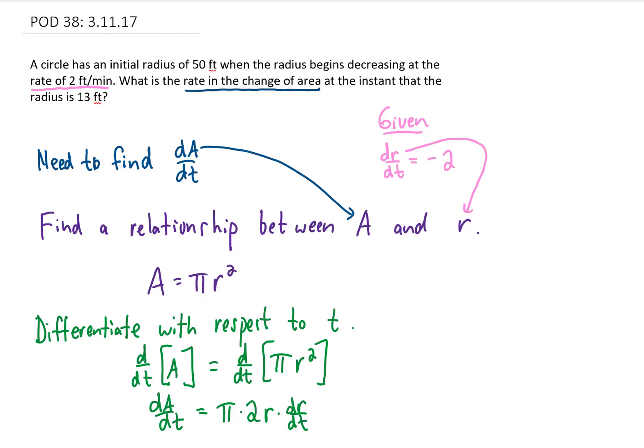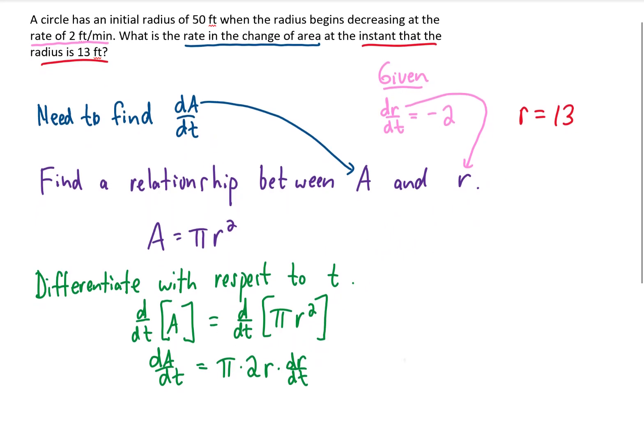So let's reevaluate what we're doing here. We decided that we need to find dA/dt. That's right here. We know that we were given that dr/dt is negative 2, so that's going to be plugged in right here. All we need now is a value of r to find our answer, and we're looking for this rate of change at the instant that the radius is 13 feet. That tells us that we're going to be using r equals 13 in this problem, so let's finish this up.